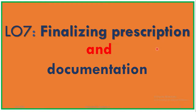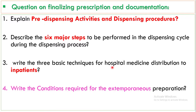Hi guys, today I have to discuss finalizing prescription and documentation. These are the questions on finalizing prescription and documentation. The first is: explain predispensing activities and dispensing procedure. The second is: describe the six major steps to perform a dispensing cycle during the dispensing process. The third is: write the three basic techniques for hospital medicine to distribute in patients. The fourth: write the conditions required for extemporaneous preparation.